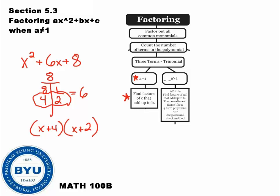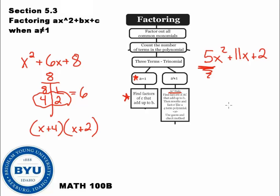Now in this section, we're going to talk about what we do when the A value does not equal 1. For example, what if we had 5x squared plus 11x plus 2? This does not follow the same rules because this A value is not equal to 1. So we've got to use a different rule — the AC rule. It's a really good rule, so let's get to it.